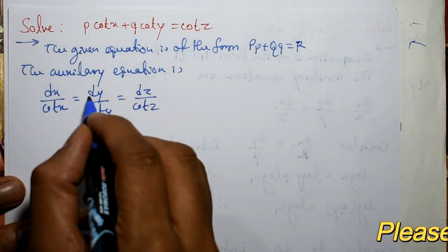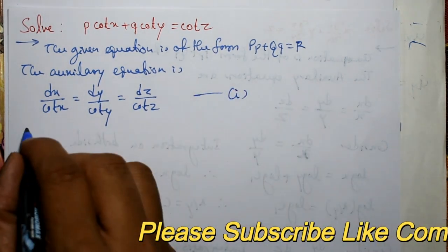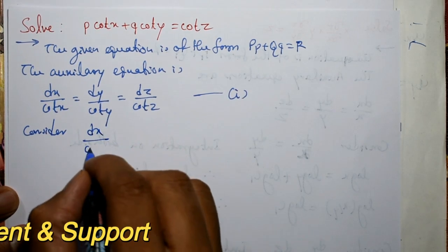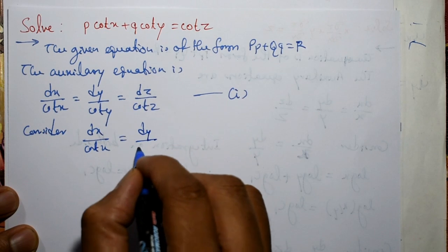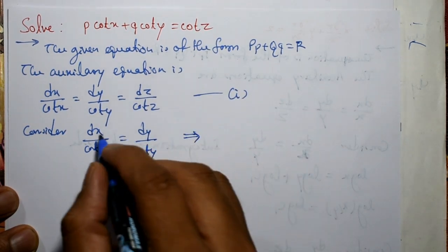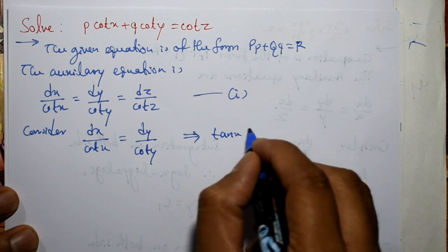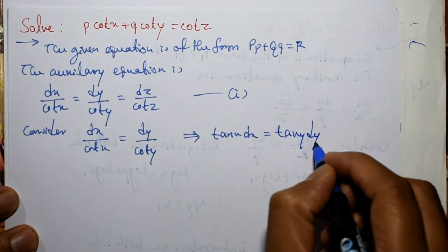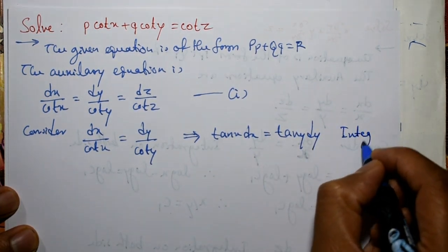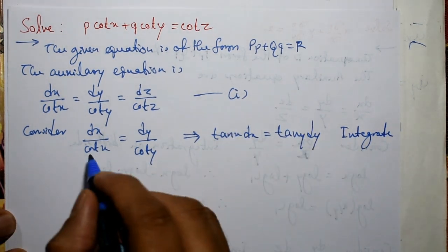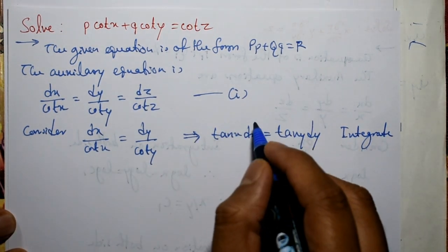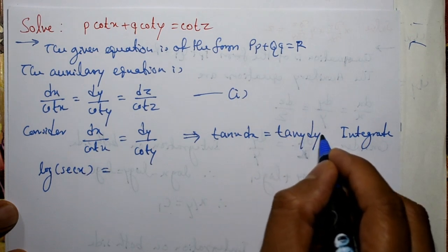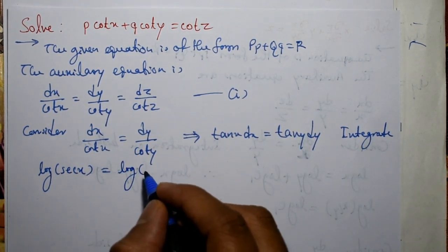Now consider the first term and second term — equation number one. Taking dx by cot(x) equal to dy by cot(y). Since 1/cot is tan, this gives tan(x)dx = tan(y)dy. Integrating on both sides: the integration of tan(x) with respect to x gives log(sec x), and the integration of tan(y) with respect to y gives log(sec y).